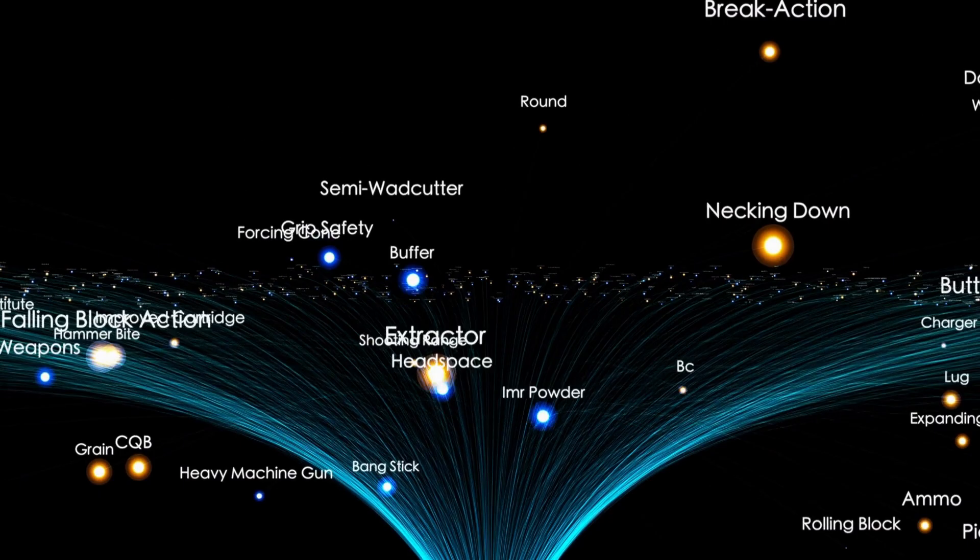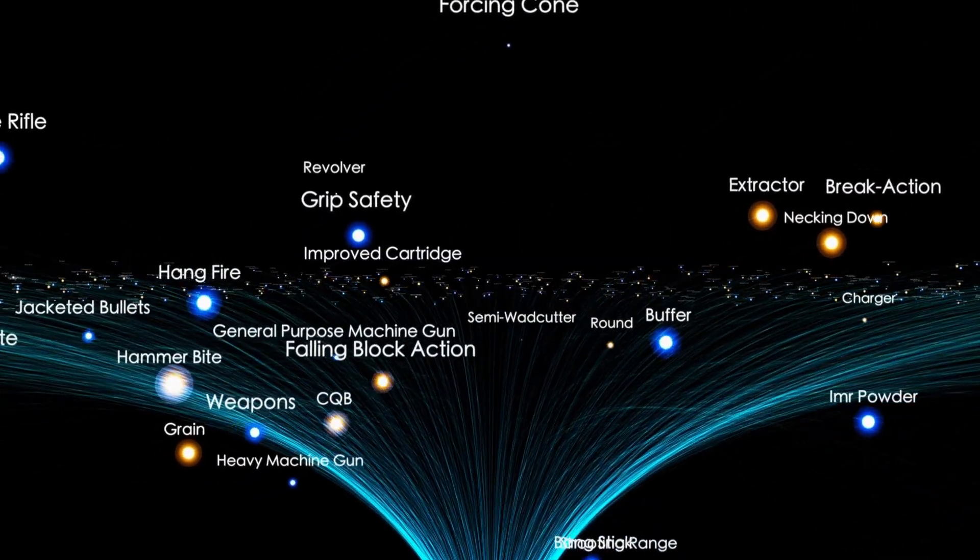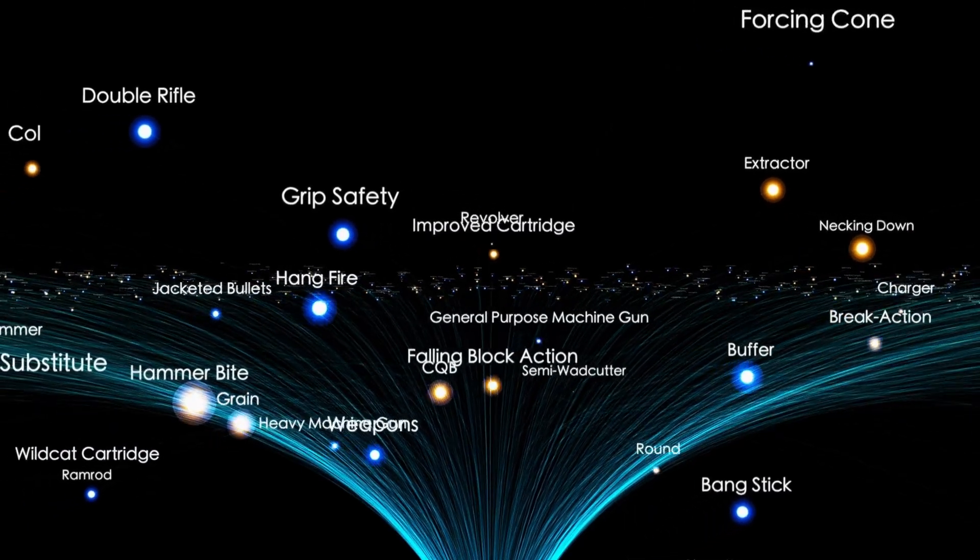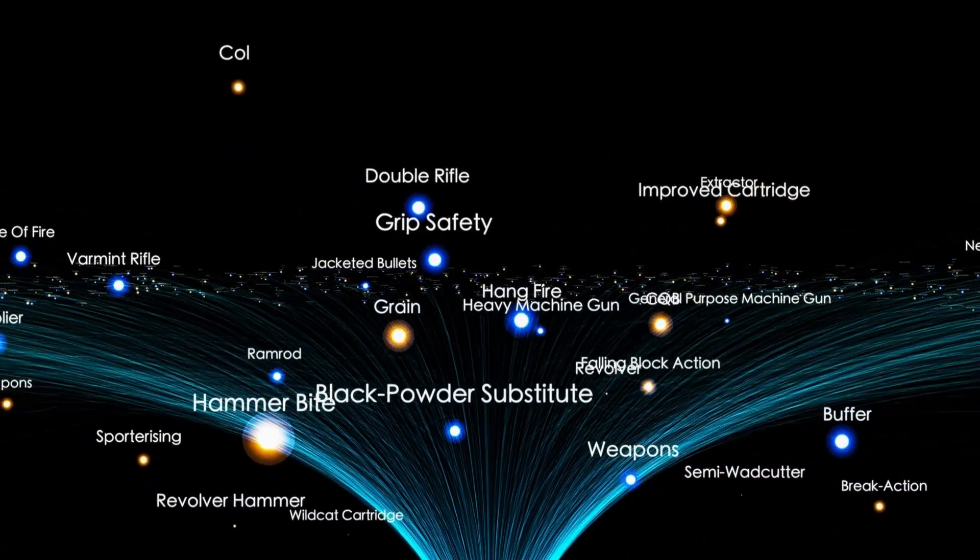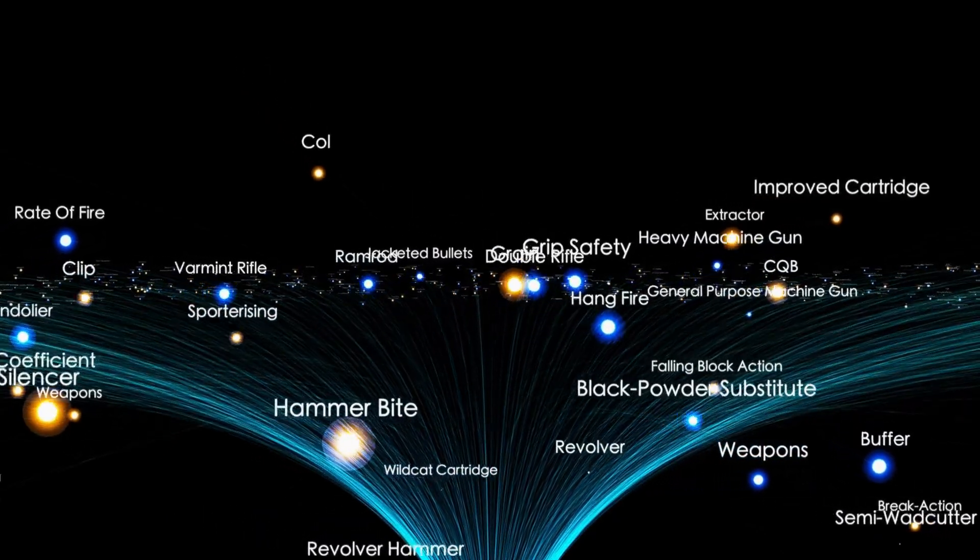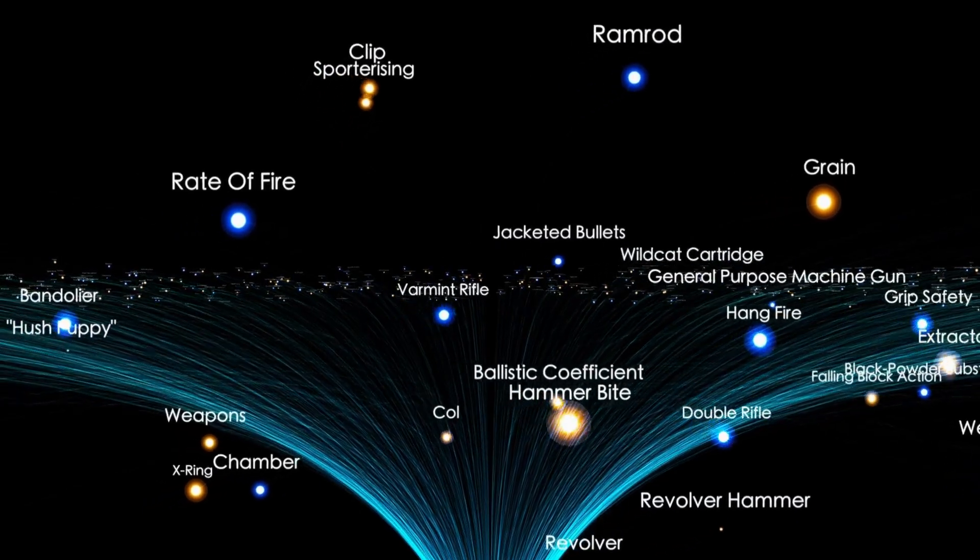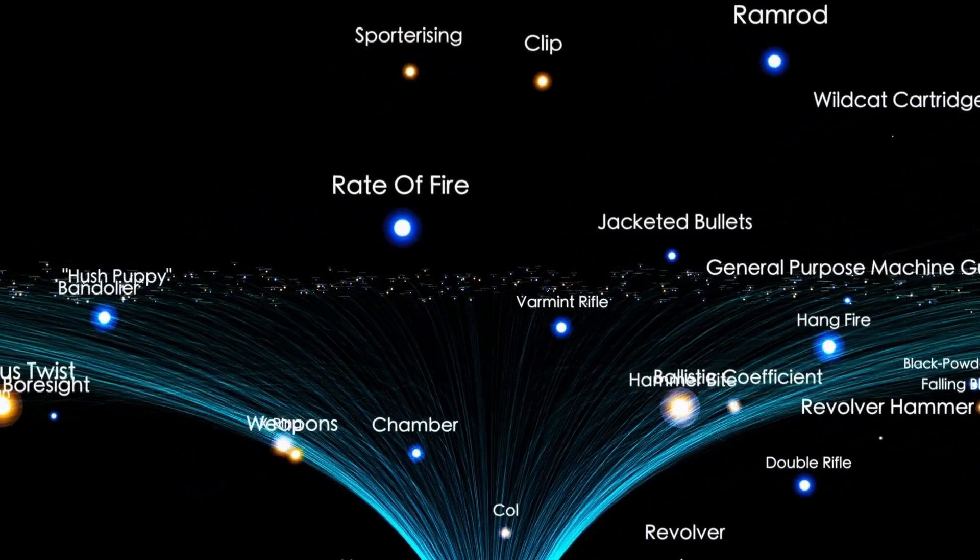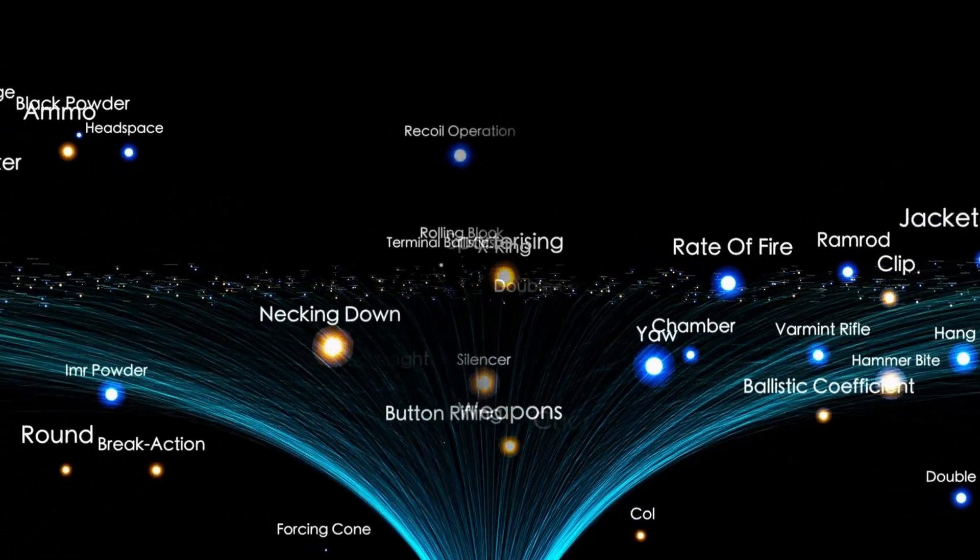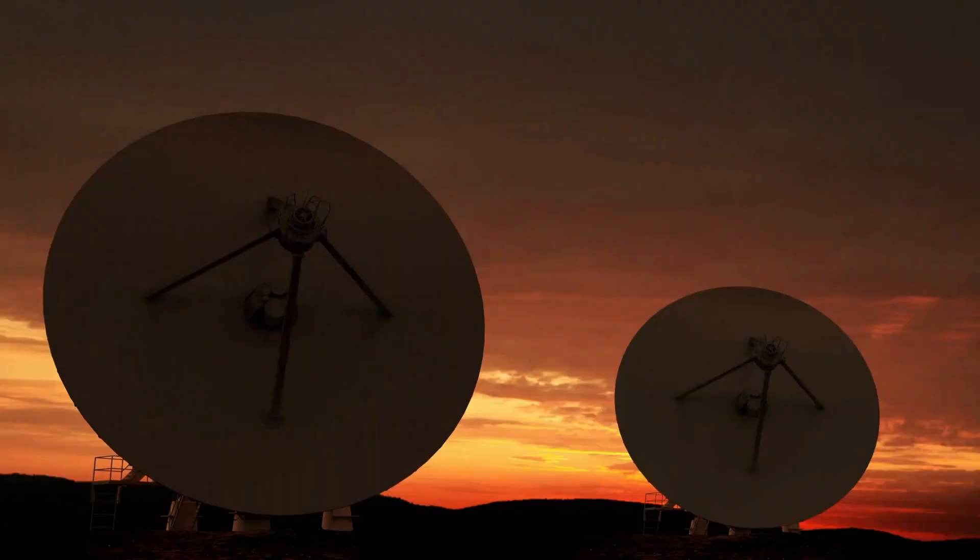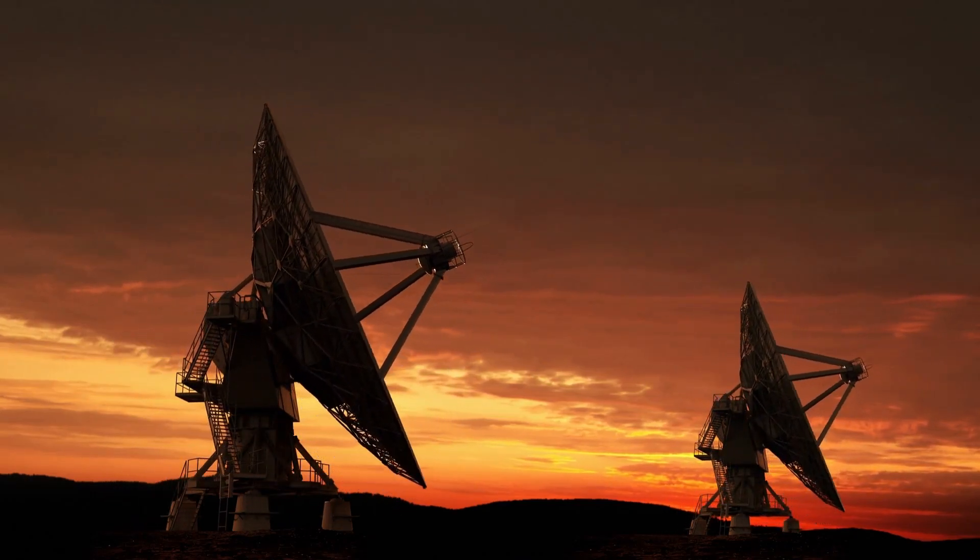In contrast, orbital bombardment is carried out using space-based weapons, and its accuracy is not affected by weather conditions. The precision of orbital bombardment is due to the sophisticated sensors and guidance systems incorporated in the weapons. Therefore, while both methods are used in warfare, weather conditions play a crucial role in the effectiveness of atmospheric bombardment, while orbital bombardment is relatively unaffected by such conditions.